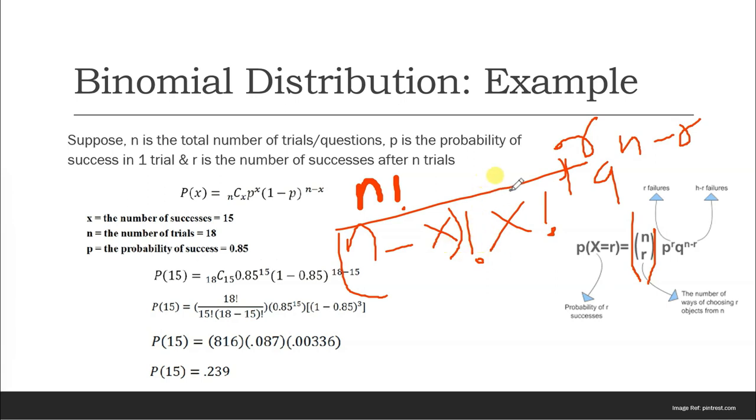We have p to the power r. This tells us the probability of success for x number of trials or r number of trials. Don't get confused - I have used r here, it is x, so it's the same thing.